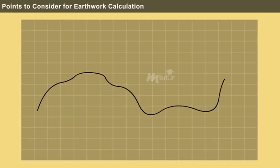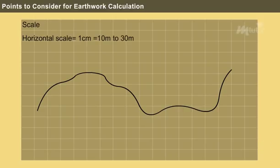Scale. Generally, while plotting the longitudinal section with a horizontal scale, 1 centimetre is equal to 10 metres to 30 metres and in the vertical scale, 1 centimetre is equal to 1 metre to 5 metres.